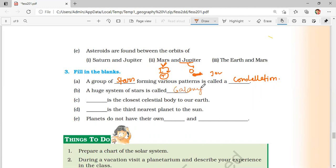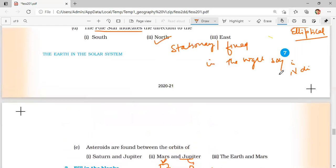Which is the closest celestial body? The natural satellite of the Earth, that is the moon. Which is the third nearest planet to the sun? Of course, Earth. Planets do not have their own heat and light. They get this from the stars. So this was all about the solution to these questions of this chapter.